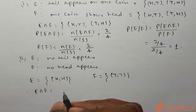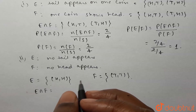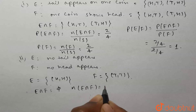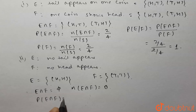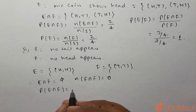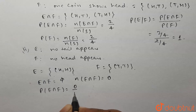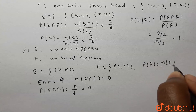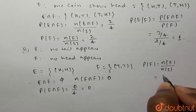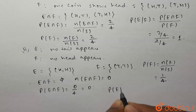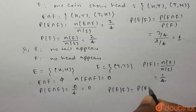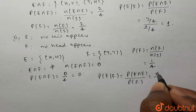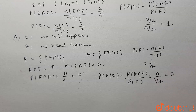E intersection F will be an empty set since there are no common elements in events E and F. So the number of elements in E intersection F is 0, making P(E∩F) = 0/4 = 0. The probability of F is 1/4. Therefore, P(E|F) = P(E∩F)/P(F) = 0/(1/4) = 0. The answer to the second part is 0.